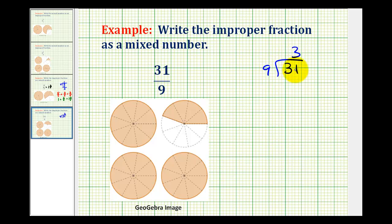There are three nines in thirty-one. Three times nine is equal to twenty-seven, and we have a remainder of four. So this tells us that thirty-one-ninths is equal to three and four-ninths.